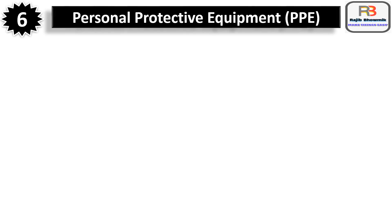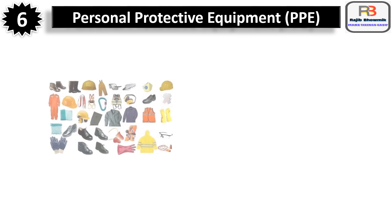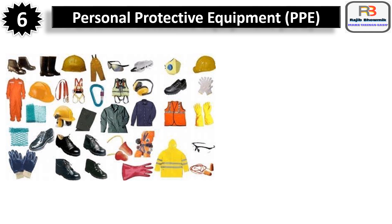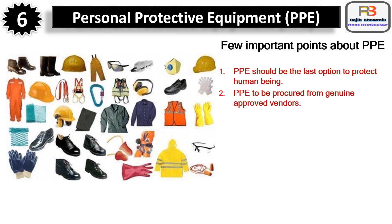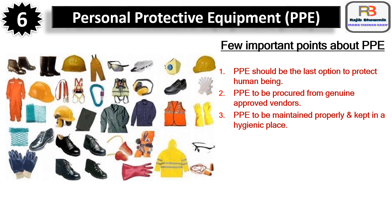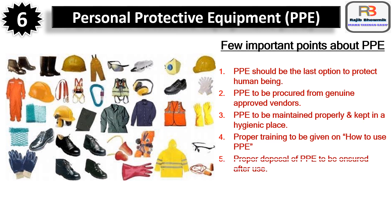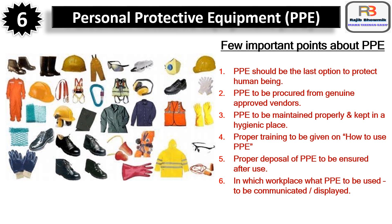Number six is Personal Protective Equipment — PPE. Various PPEs are: hand gloves, safety shoes, helmet, ear plug, goggles, apron, nose mask, safety harness, etc. Few important points: PPE should be the last option to protect human beings; PPE to be procured from genuine approved vendors; PPE to be maintained properly and kept in a hygienic place; proper training to be given on how to use PPEs; proper disposal of PPE after use; required PPEs must be available at the workplace.